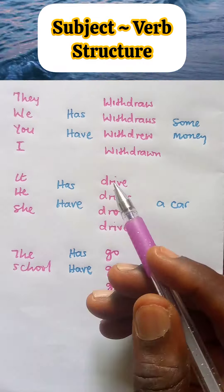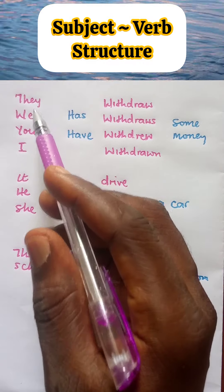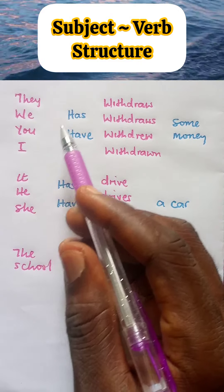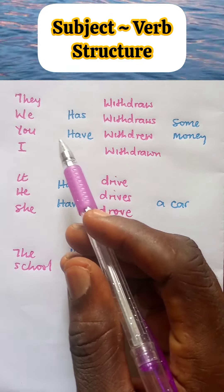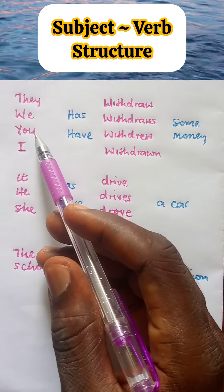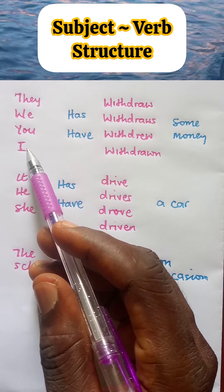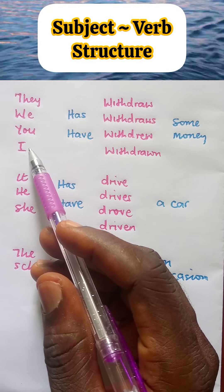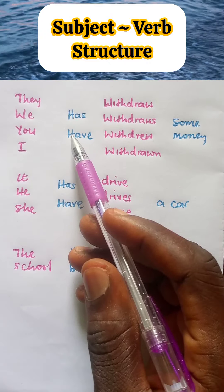So, let's look at the structure. They, we, you, I — has or have. Now, all of these are plural subjective pronouns, except I. I is a singular subjective pronoun, but I usually takes a plural verb.